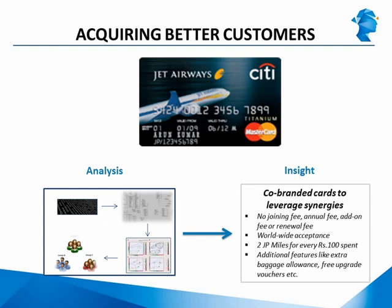The first example is from the financial services world. If you look at the credit card here on the screen, you'll see it's a co-branded card with two logos — the Citibank logo on the right and the Jet Airways logo on the left. What's different about this card is that there is no fee of any kind: no joining fee, no annual fee, no add-on fee, no renewal fee. On top of that, every time you spend money you get free JP Miles — two JP Miles for every hundred rupees spent — plus extra baggage allowance and free upgrade vouchers.